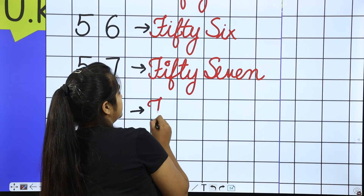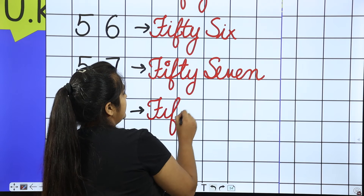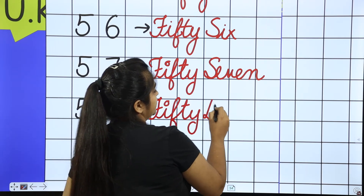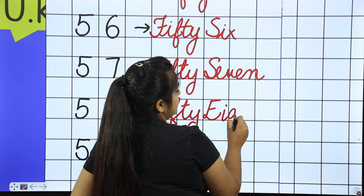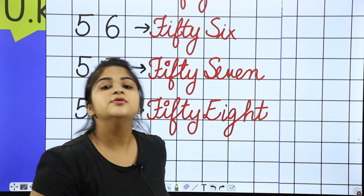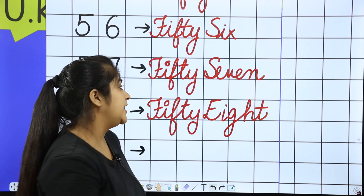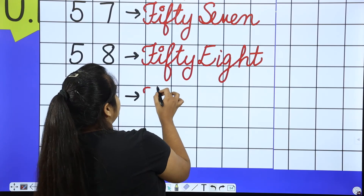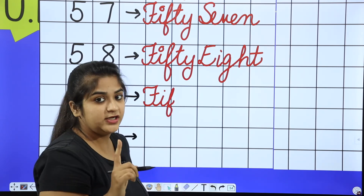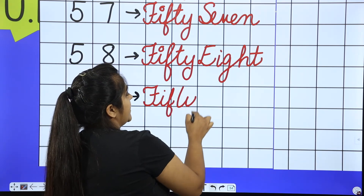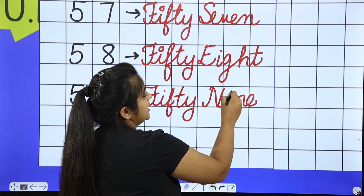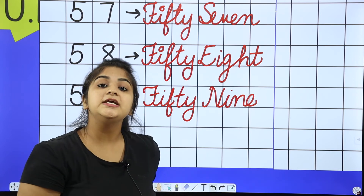Next is 58. F-I-F-T-Y, then E-I-G-H-T. What does 58 become? FIFTY EIGHT. Next is 59. F-I-F-T-Y, then N-I-N-E. So 59 is FIFTY NINE.